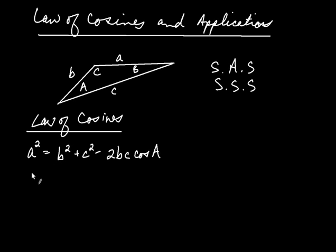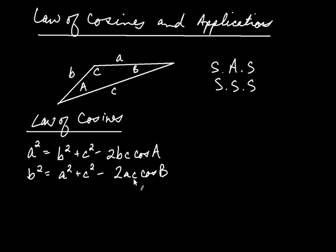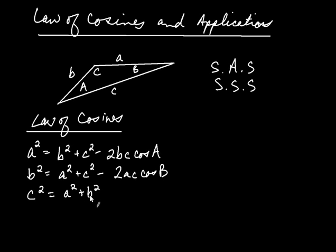There's nothing special about a being isolated. You could also write: b squared is a squared plus c squared minus 2ac times cosine of angle B. What's important is that the side isolated on the left corresponds to the angle opposite it, and the other two sides appear on the right. Likewise, c squared is a squared plus b squared minus 2ab times cosine of angle C.